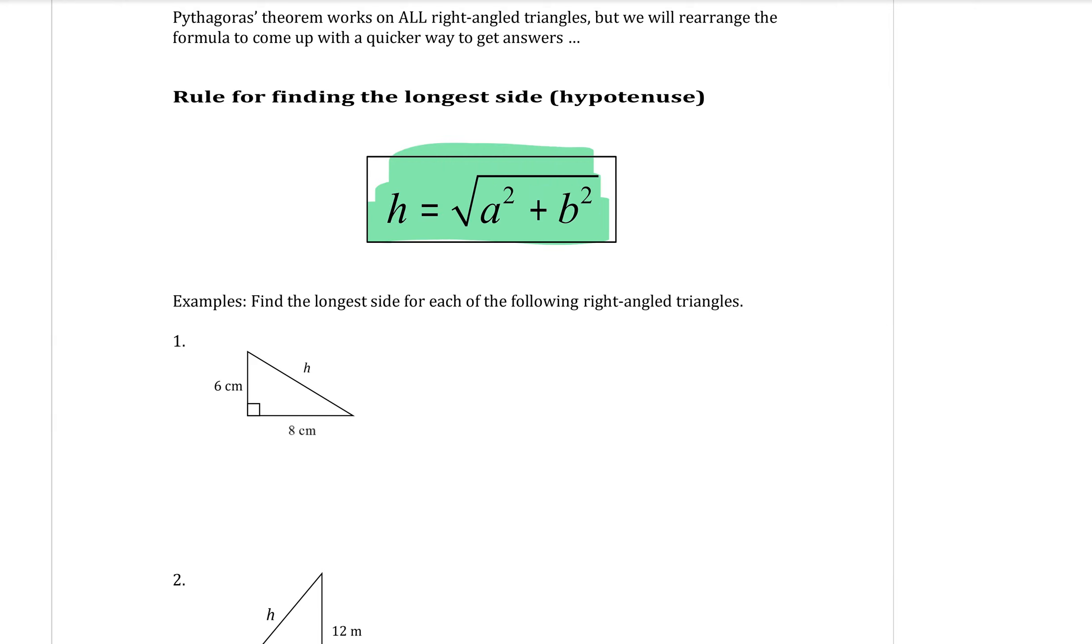h equals big square root sign of a squared plus b squared. So all I've done is to get rid of the squared that was on top of that h there. I've square rooted the other side.